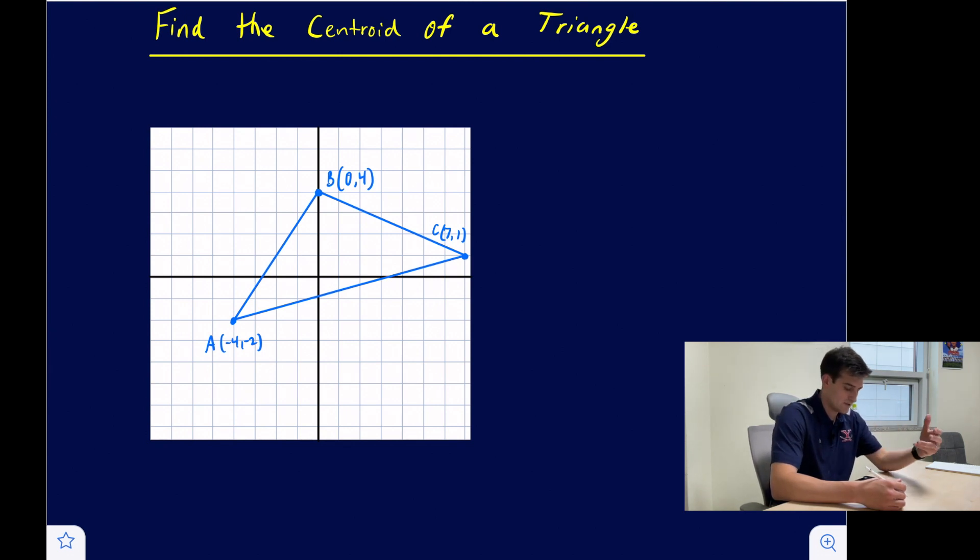When you're looking at this on a coordinate plane, it's helpful if the vertex to the opposite side is either a vertical or a horizontal segment. The reason that is is because the centroid is located two-thirds of the way from the vertex to the other side.